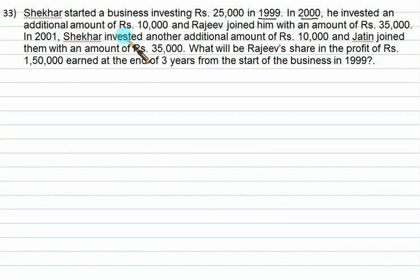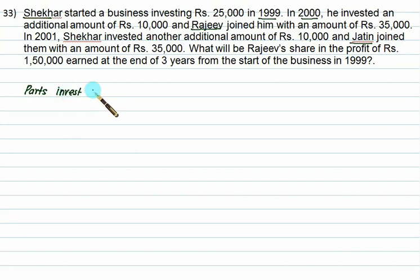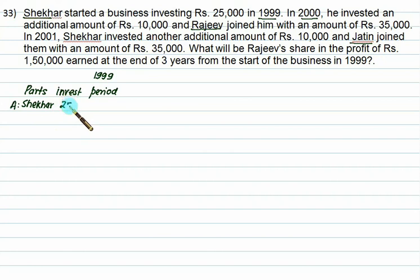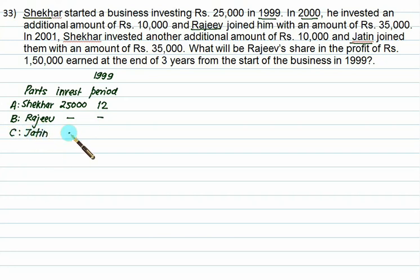Shaker started a business investing 25,000 in 1999. In 2000, he invested an additional 10,000, and Raju joined him with 35,000. In 2001, Shaker invested another 10,000 and Jatin joined with 35,000. We want Raju's share in profit of 1,50,000 earned at the end of 3 years. We break up 3 years by year. In 1999: A (Shaker) invested 25,000 for 12 months; B (Raju) and C (Jatin) had no investment.